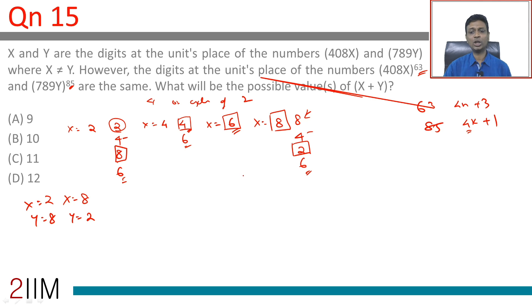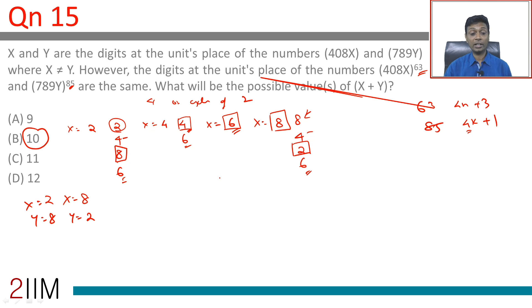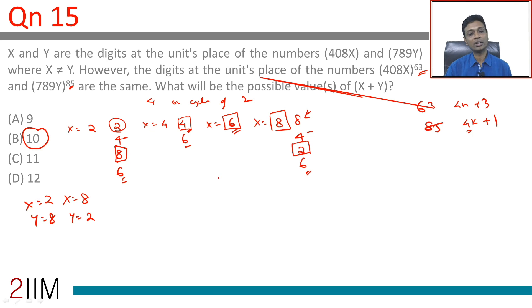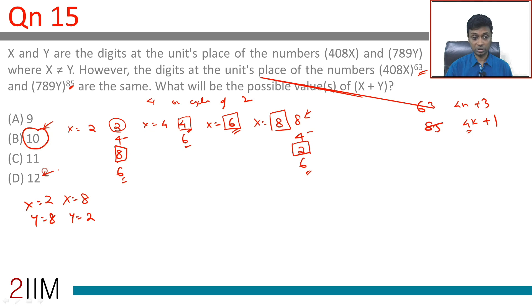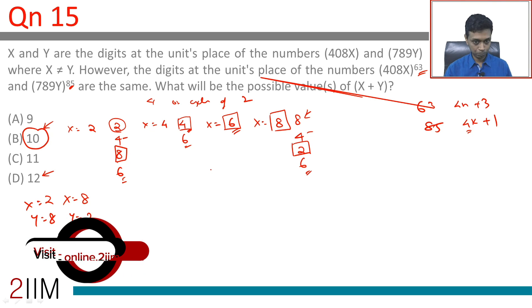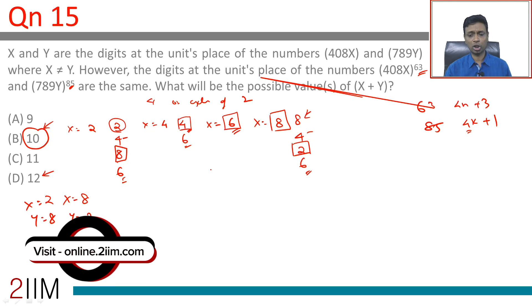So the possible value of x plus y is 10. Remember that x and y can both be odd as well. It cannot be 1 odd and 1 even — either both are odd or both are even. If both are even, 10 is a possibility. We also have to explore whether it could be 12, or combinations like 3 and 9, or 5 and 7.